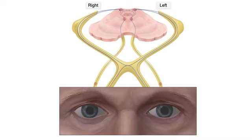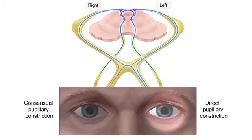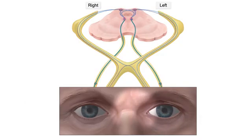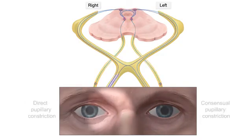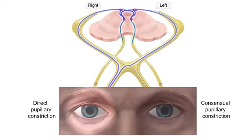Due to the crossovers in this pathway, light entering one eye causes both direct pupillary constriction in the ipsilateral eye and consensual pupillary constriction in the contralateral eye.